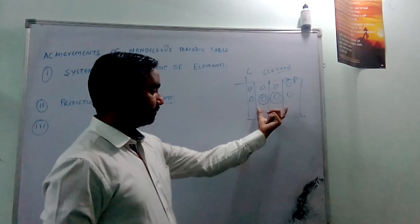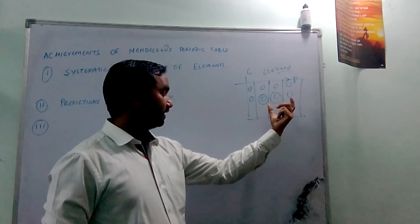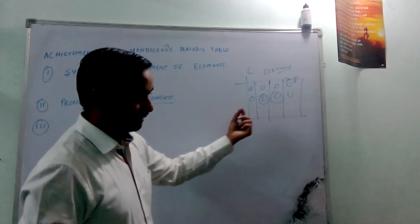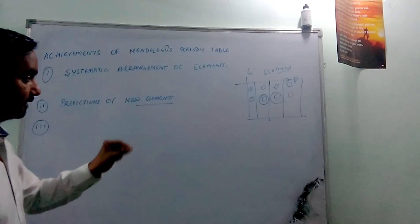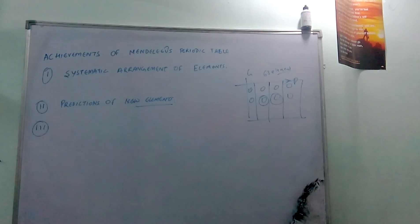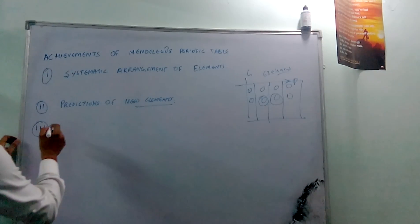He placed some gaps within the table for new elements, and they are perfectly fitted at the same point. The third one is he corrected the doubtful atomic masses.